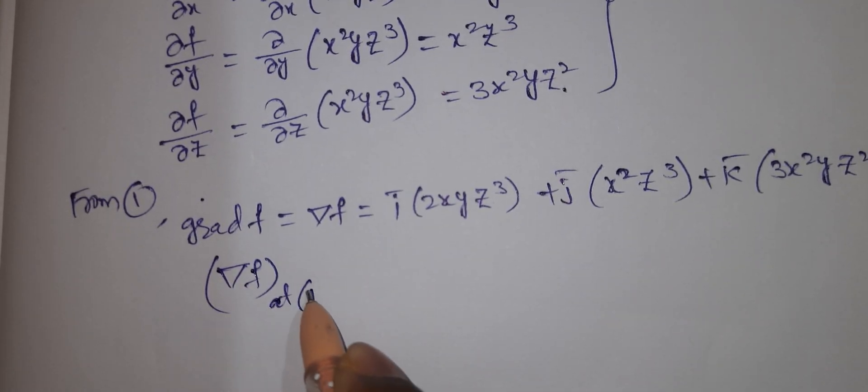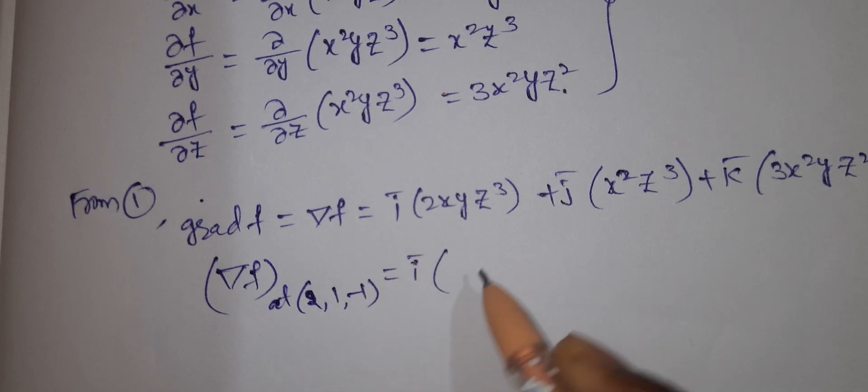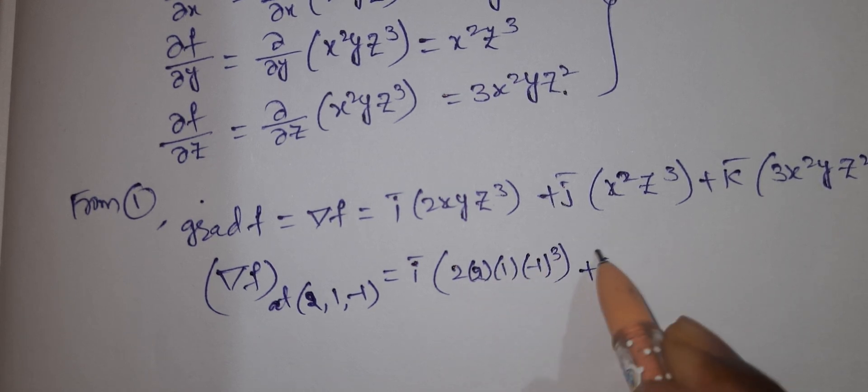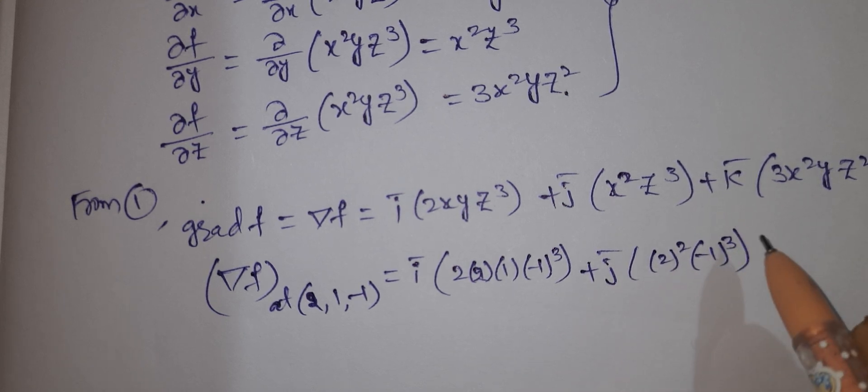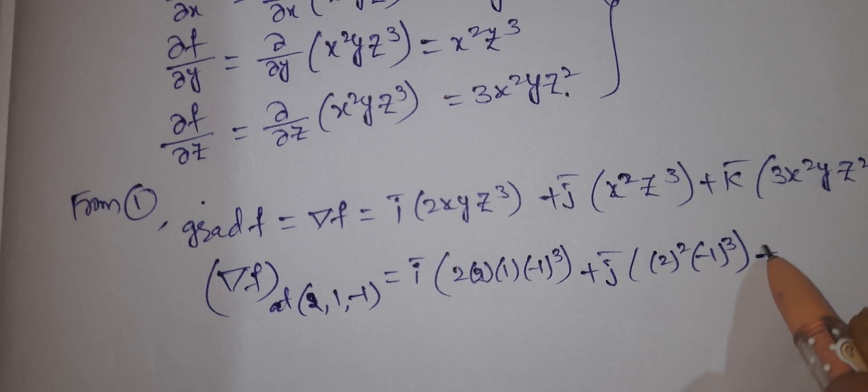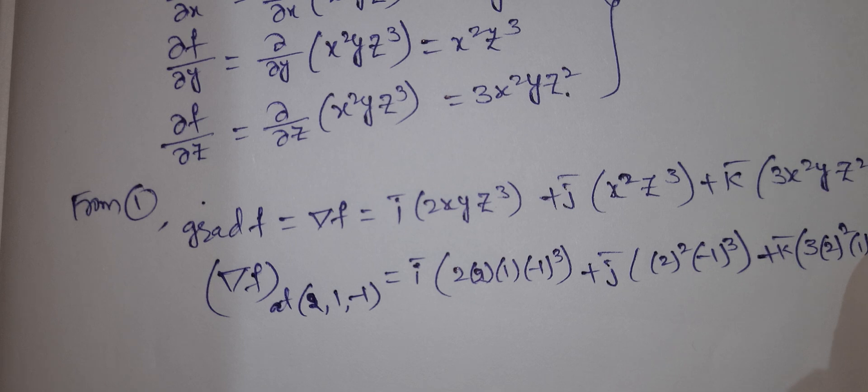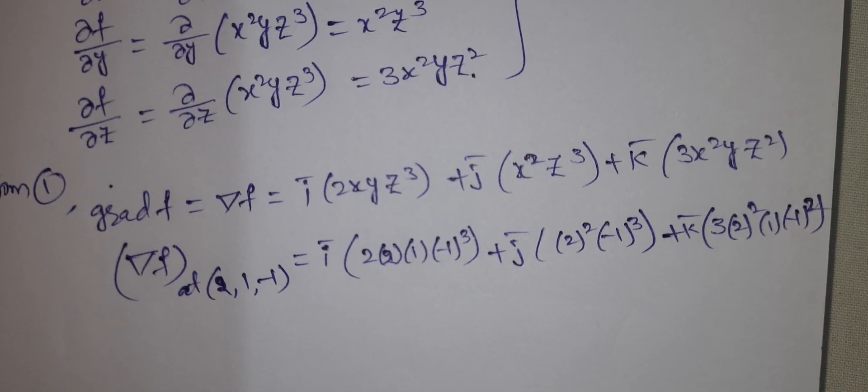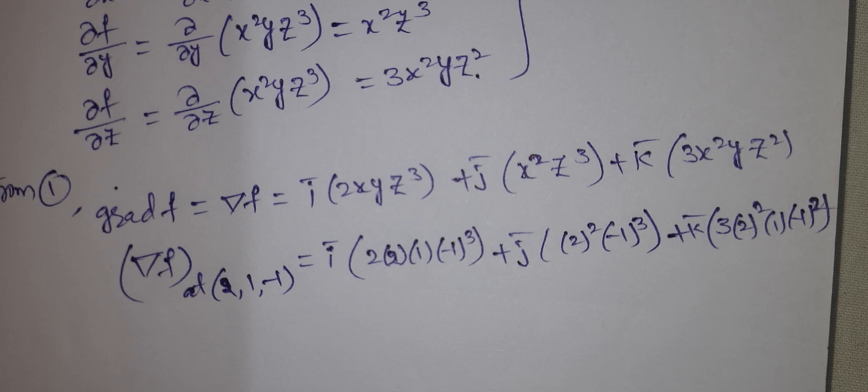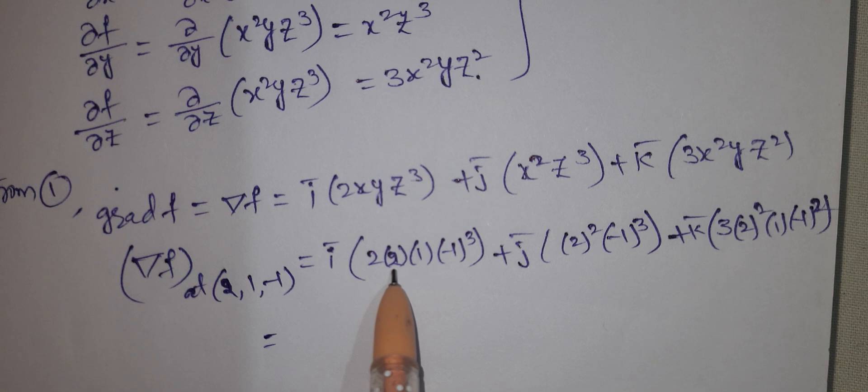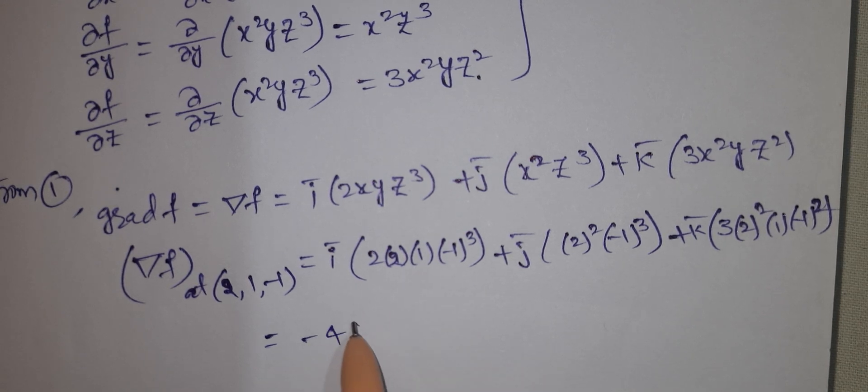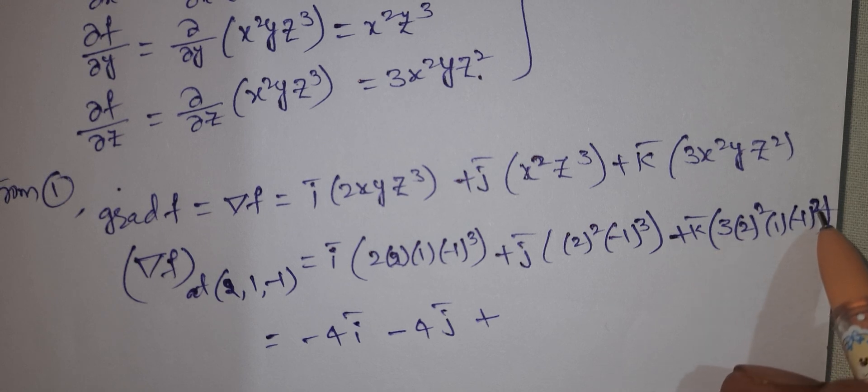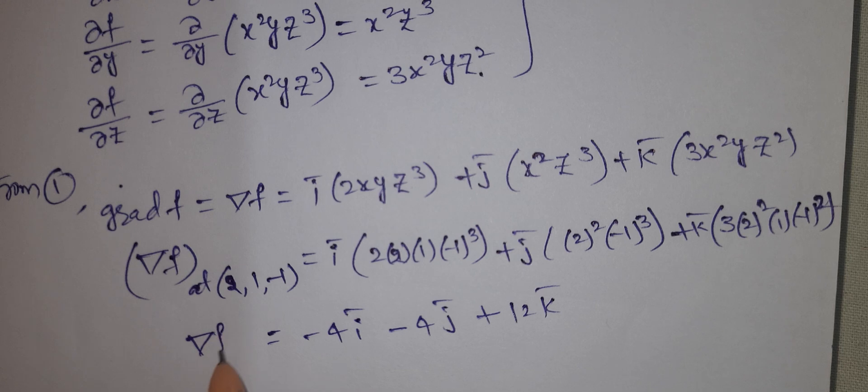Del f at point (2, 1, -1) equals i bar times 2 times 2 times 1 times (-1) cubed plus j bar times 2 squared times (-1) cubed plus k bar times 3 times 2 squared times 1 times (-1) squared. This (-1) squared is plus 1, but (-1) cubed is minus 1. The cube is an odd power. This equals -4i bar - 4j bar + 12k bar.